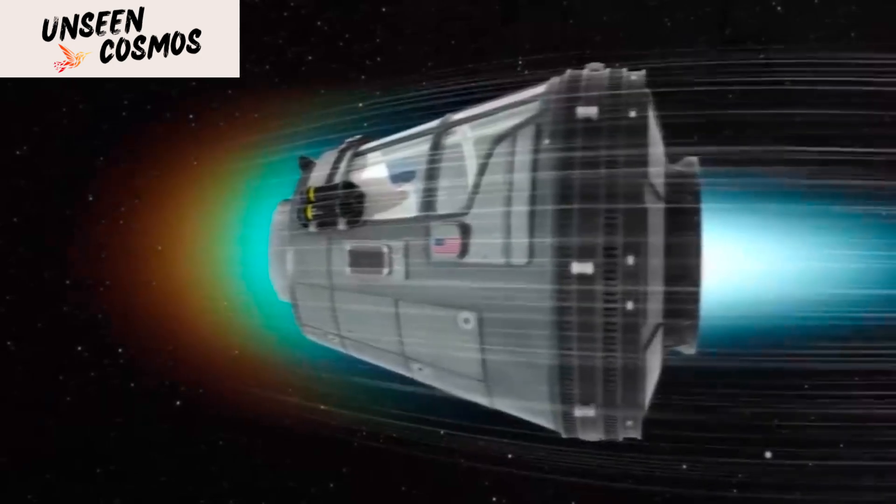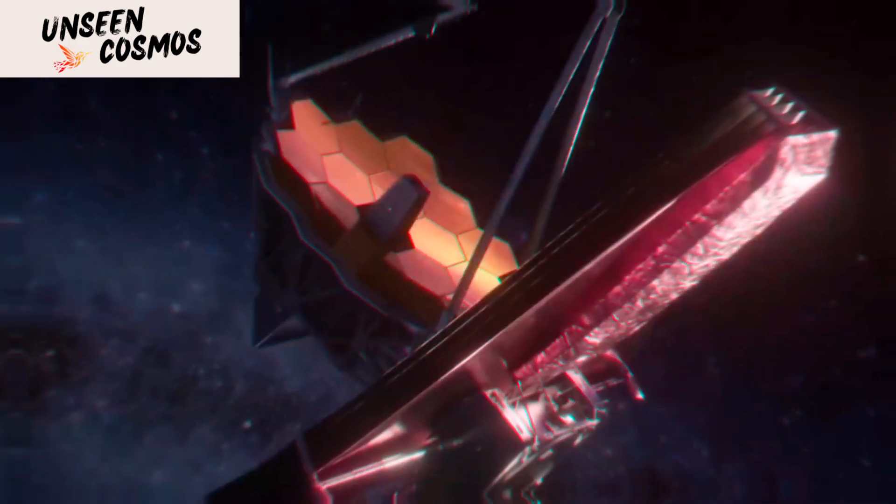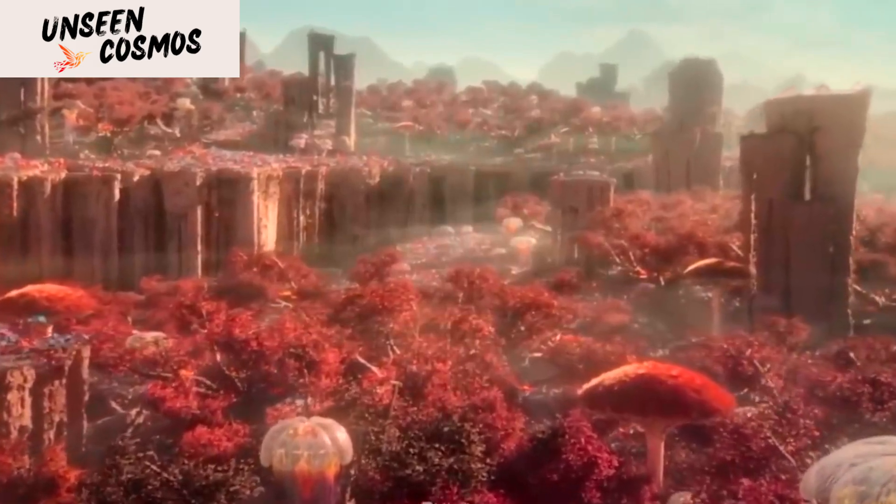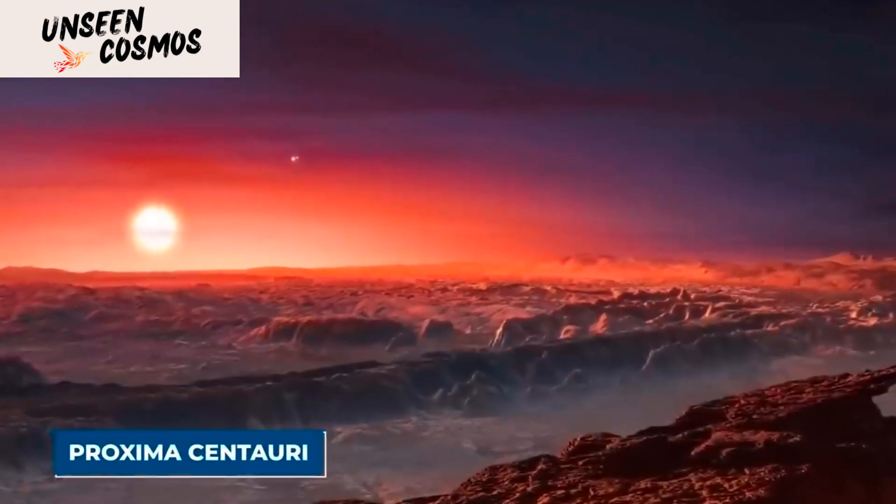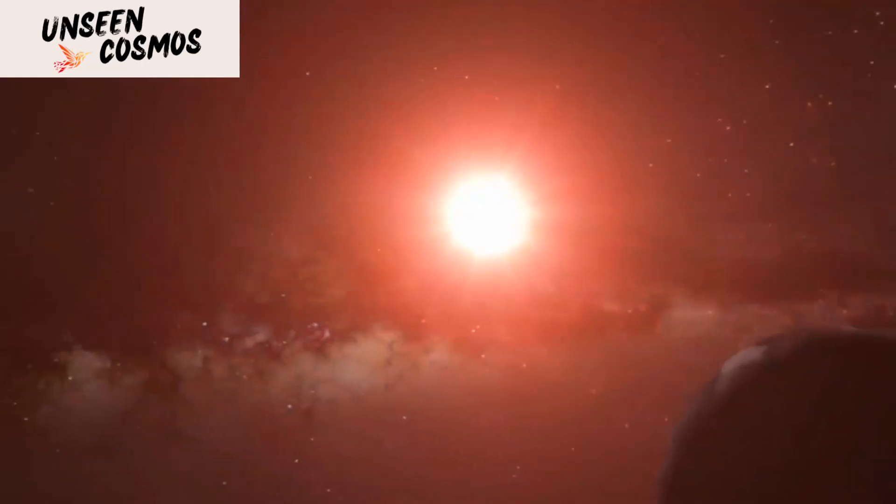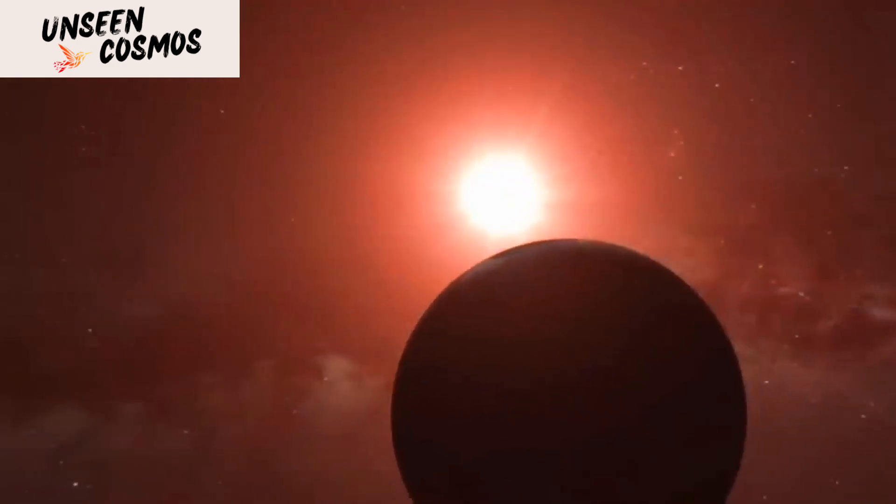However, Proxima Centauri is a red dwarf star, which is much cooler and smaller than our sun. This means that Proxima b is likely to be tidally locked, which means that one side of the planet always faces the star, while the other side is in perpetual darkness.